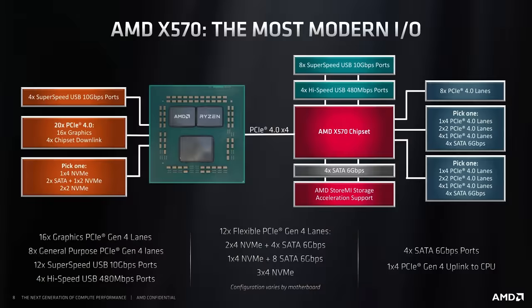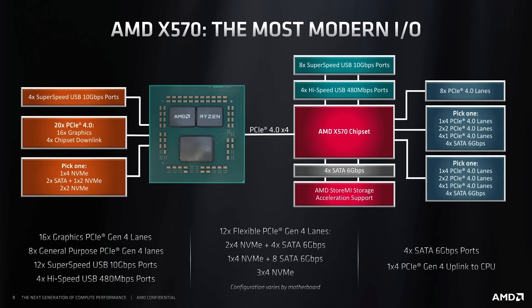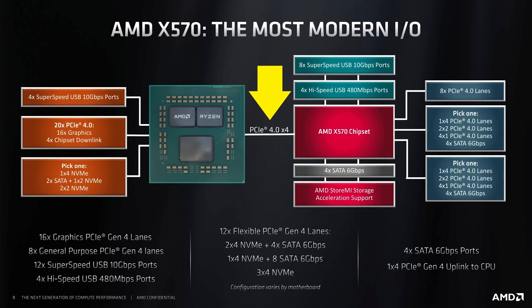Perhaps a bigger reason though is the link that connects the chipset back to the CPU. Although you'll often see diagrams showing that 16 or 20 or even more PCI Express lanes come off of the chipset, the connection that it has to the CPU is actually quite narrow — it might be only four lanes wide.